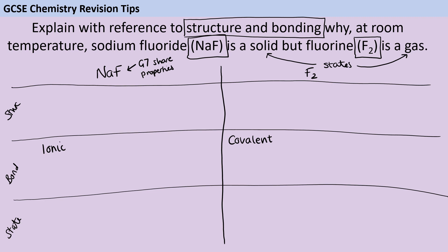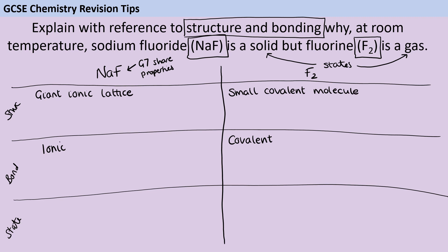Based on that, you can say that sodium fluoride forms a giant ionic lattice — that's its structure. Whereas in contrast, fluorine is a small covalent molecule. It's not one of those giant covalent structures like diamond or graphite; it's just made of small molecules containing two atoms.